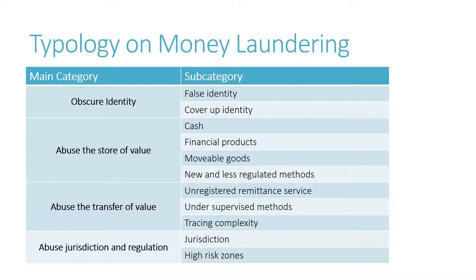Firstly, obscure identity. Secondly, abuse a store of money to avoid inspection. Thirdly, abuse a transfer of money to cover up the traces of money transfer. And lastly, use the loopholes in the jurisdiction system and regulation.